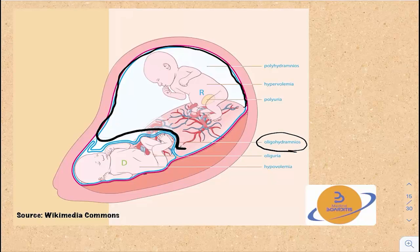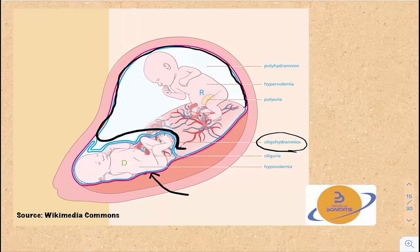Because of the oligohydramnios, the baby will be compressed against the surrounding structures. This can lead to deformities of the face and the limbs and other deformities. Also, the amniotic fluid has an important function in the development of the lungs, so oligohydramnios can also cause hypoplasia of the lungs. All these constellations of symptoms are called Potter sequence.